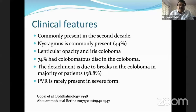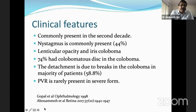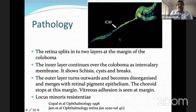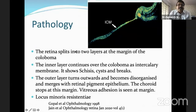We rarely see PVR primarily because the breaks occur in the coloboma, which does not have the retinal pigment epithelium. As you would know, RPE is the primary cause for inciting PVR. Now, looking at the pathology: at the margin of the coloboma, the retina splits into two layers. The inner layer continues over the coloboma as the intercalary membrane, or ICM.